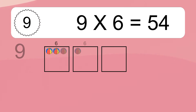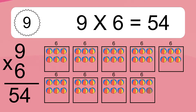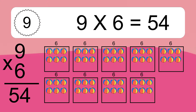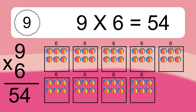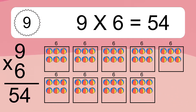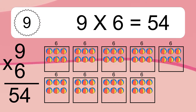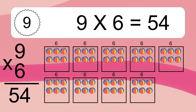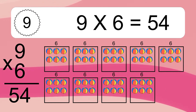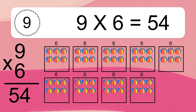9 times 6 equals 54. We have 9 boxes, and each box has 6 colorful balls inside. If you count all the balls in all the boxes together, you will have 9 times 6 balls. This equals 54 balls.